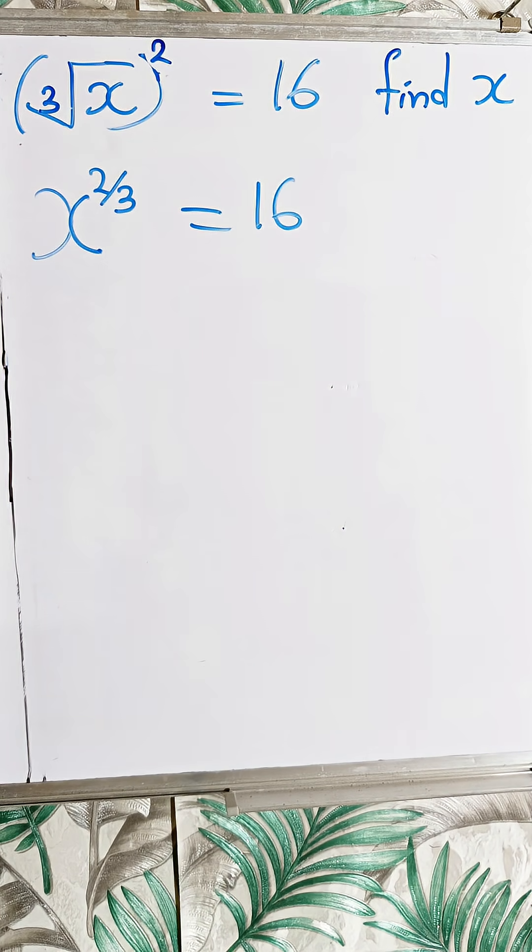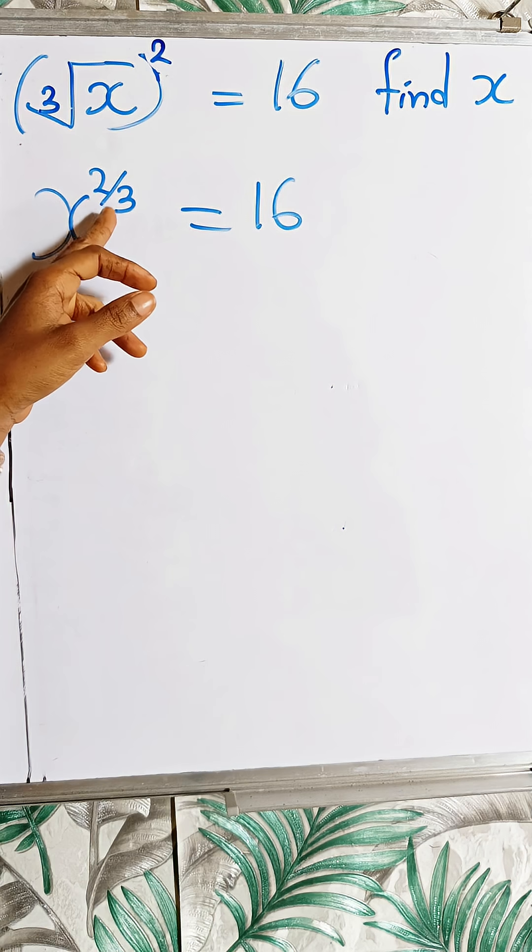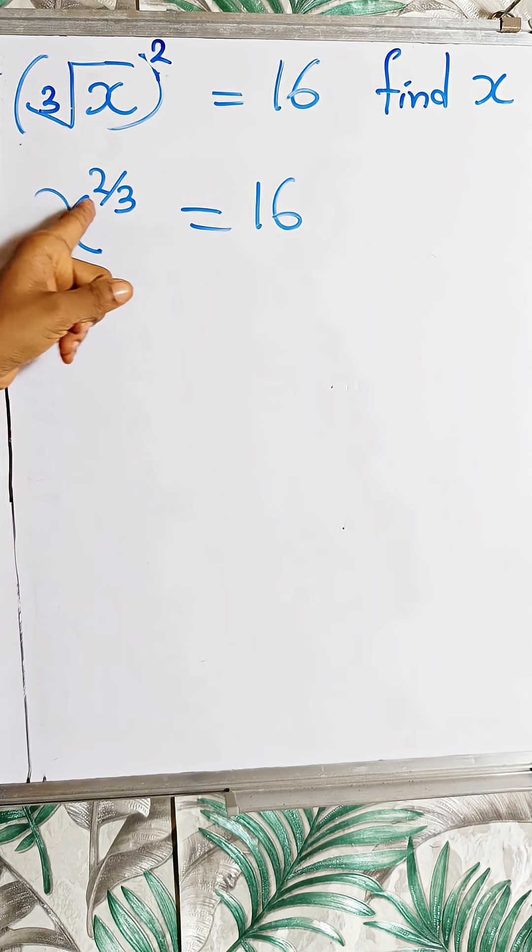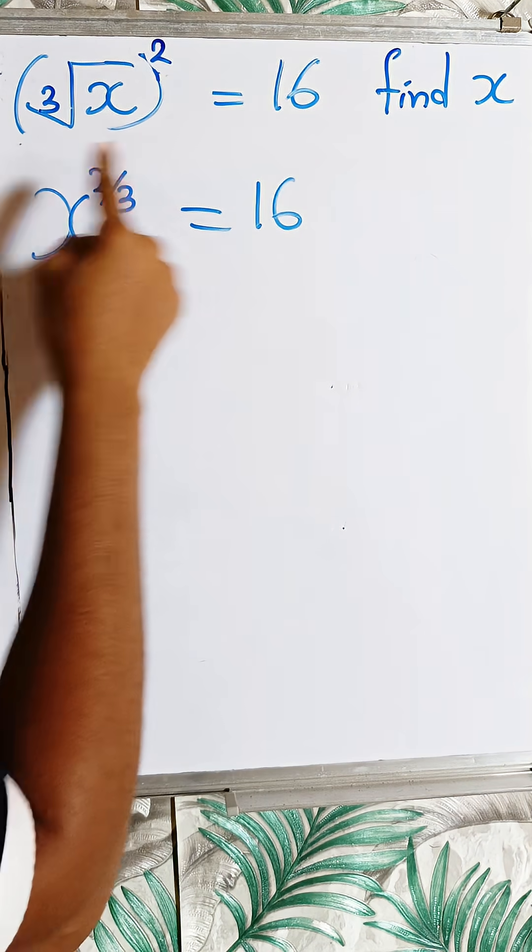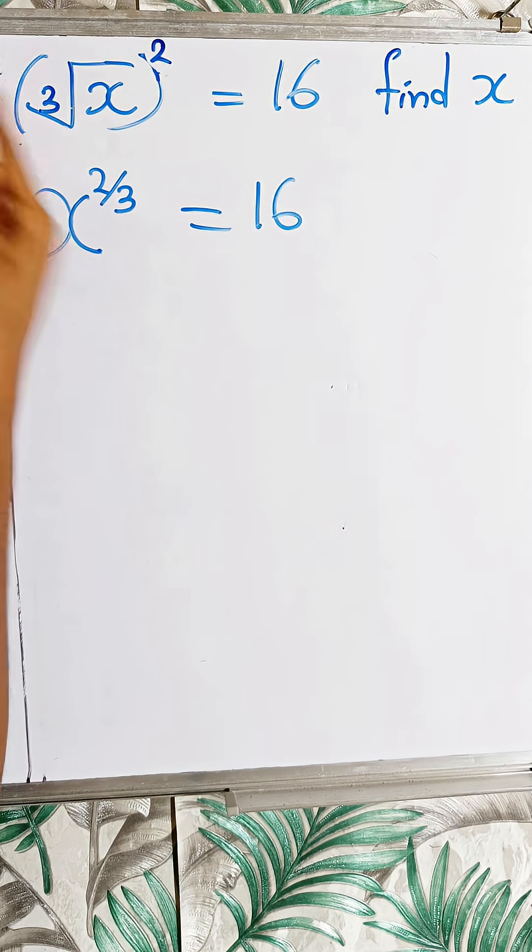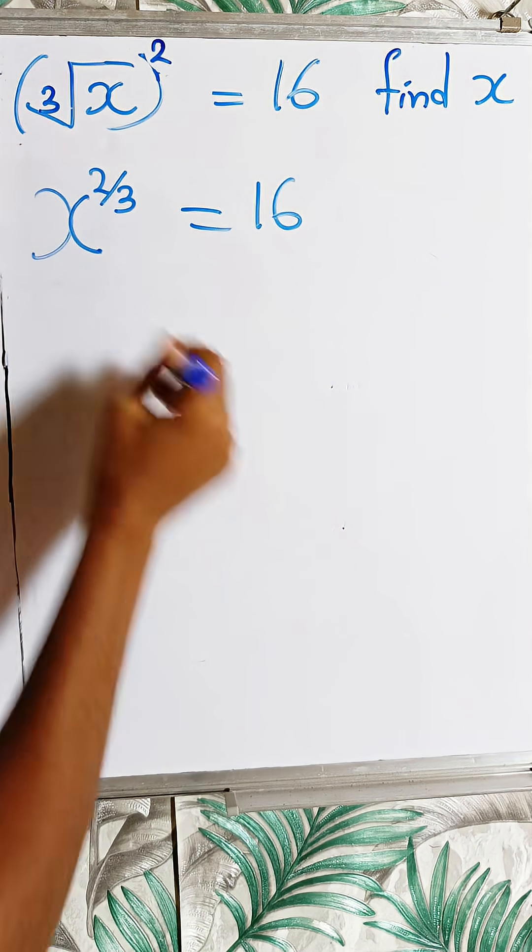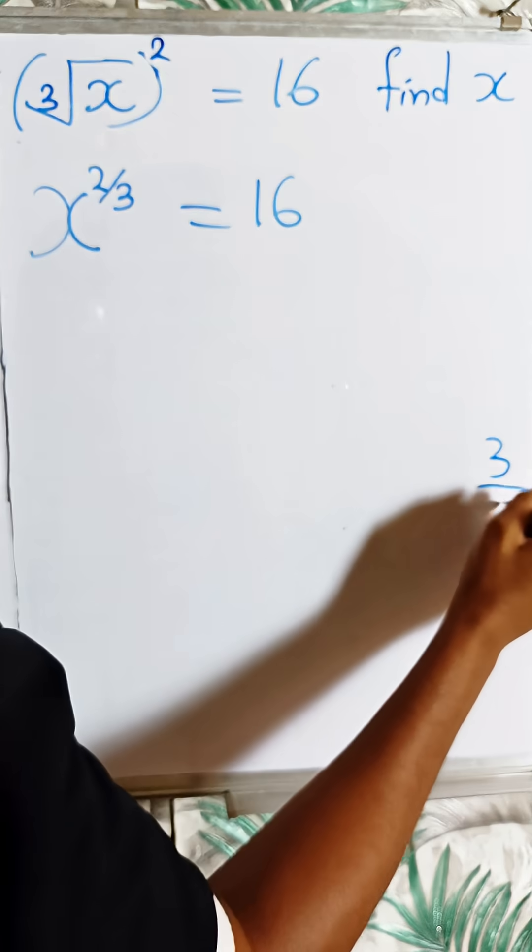What's the next thing we are going to do? We cannot find x having this exponent, so we have to eliminate this exponent. How do we do that? We have to raise both sides of the equation to the reciprocal of 2 over 3. Now, the reciprocal of 2 over 3 is 3 over 2.